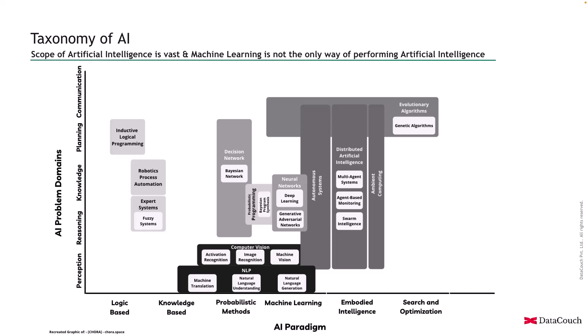AI and machine learning systems can go beyond yes or no and true or false, and they can give such kinds of outputs. Then we have computer vision, which is another area in perception and makes use of multiple AI paradigms. We also have neural networks, which make use of the structure of the human brain — the way we think.